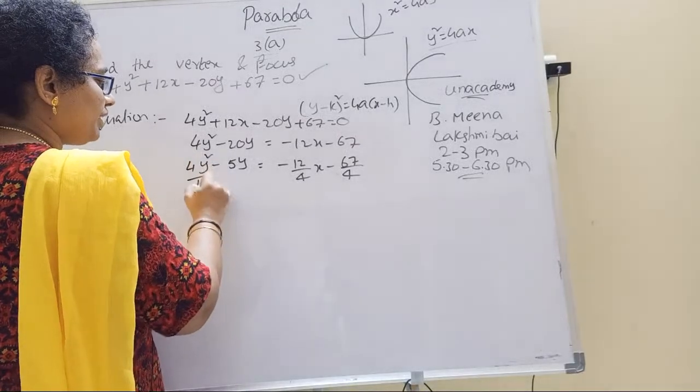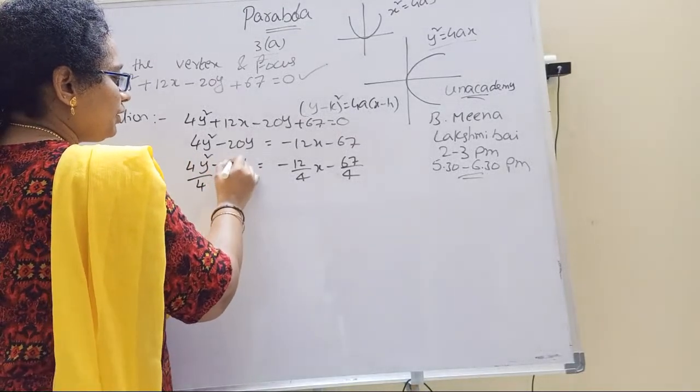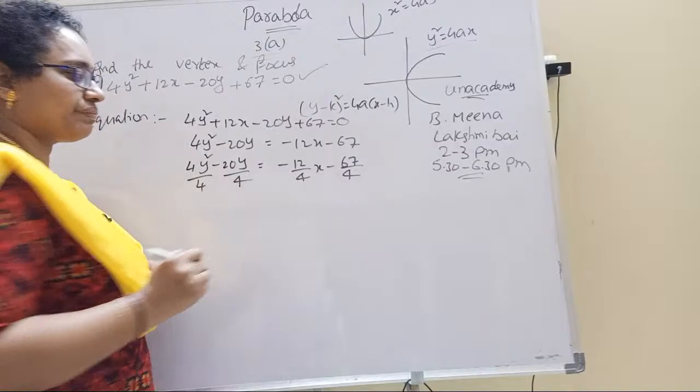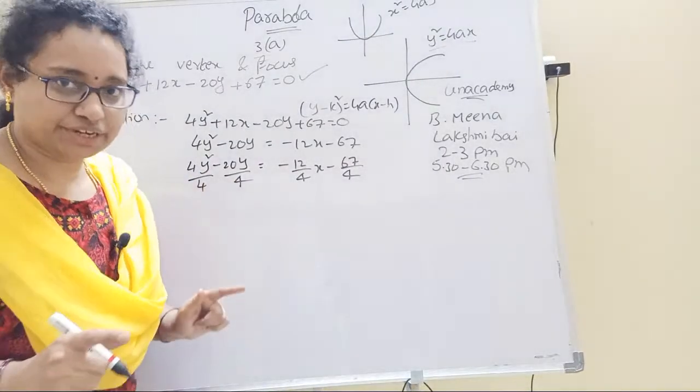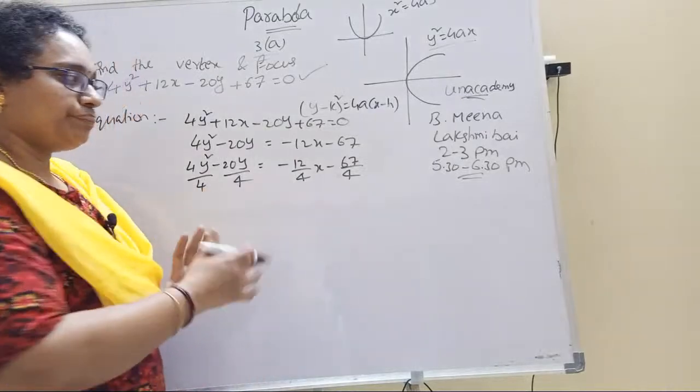Now, 4 is the coefficient, we'll make 1 the coefficient by dividing both sides by 4. Then y square minus 5y equals minus 12 by 4 x minus 67 by 4. Both sides 4 division. This will cancel to give minus 3x minus 67 by 4.